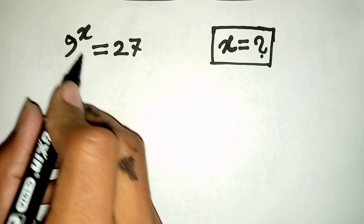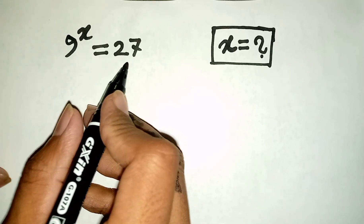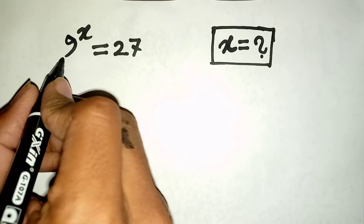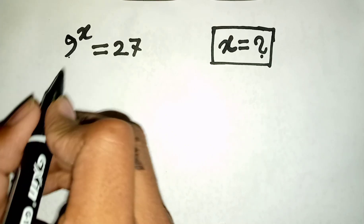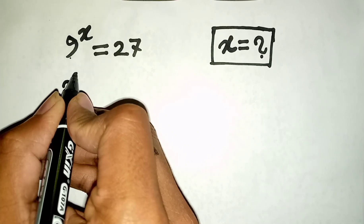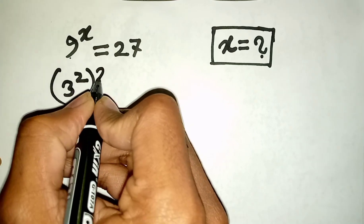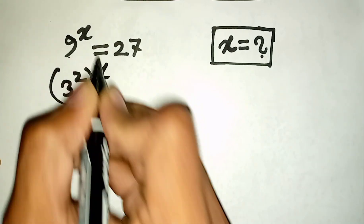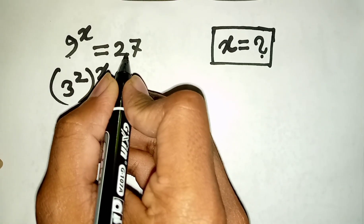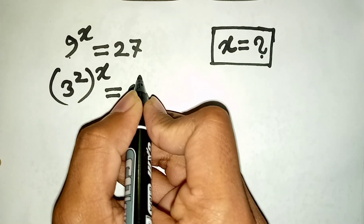How to solve 9 power x is equal to 27? Find the value of x. We have 9 power x, which is the same as 3 power 2, bracket power x, is equal to 27, which is the same as 3 power 3.